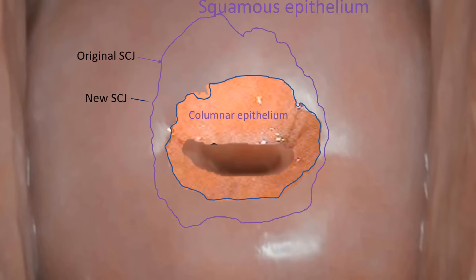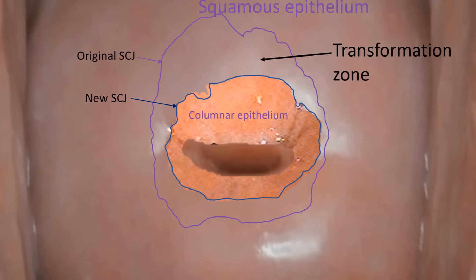A new squamous columnar junction has now been formed. The area of epithelium that develops squamous metaplasia is called the transformation zone. In other words, the transformation zone is defined as the area between the original and the new squamous columnar junction.